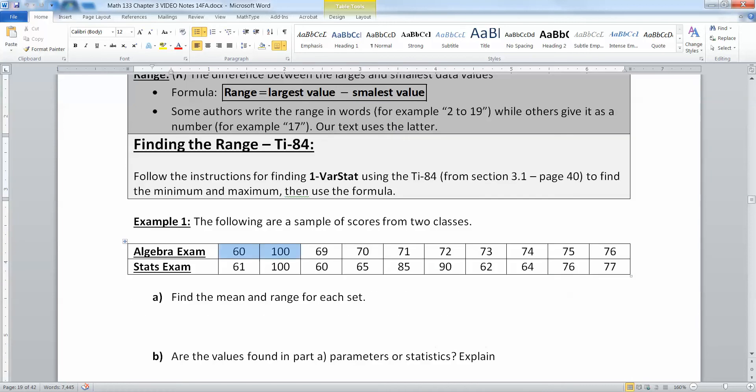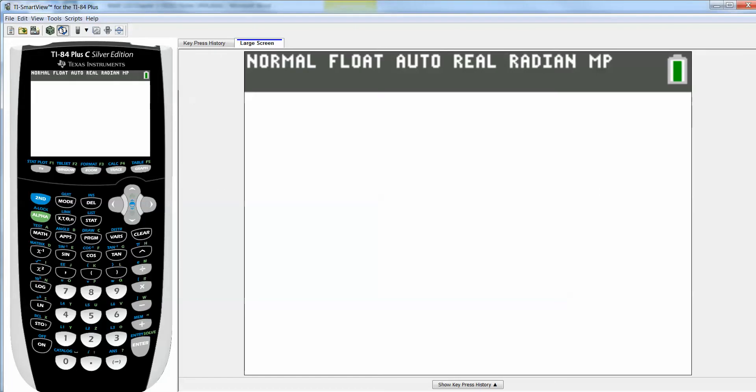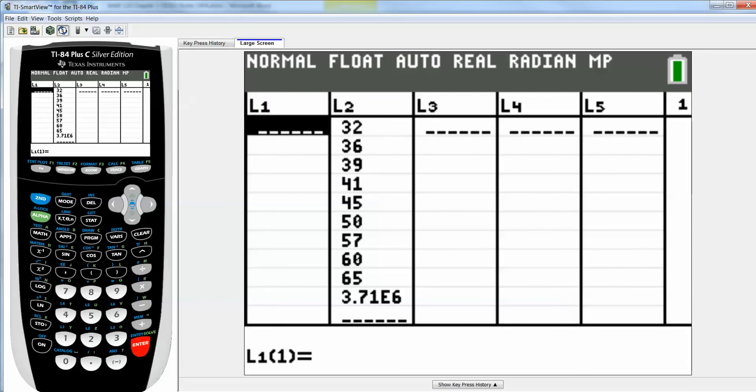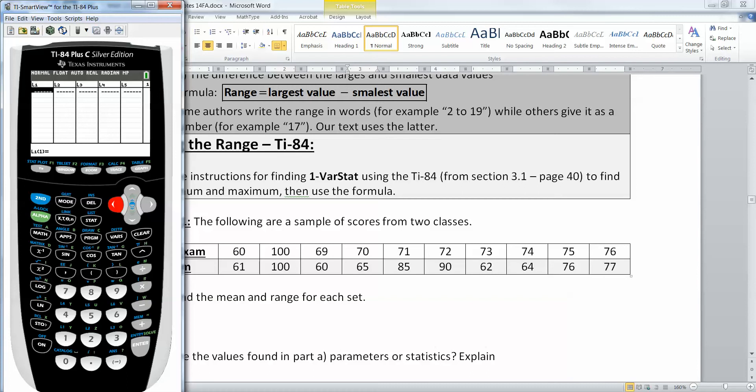We're going to find the range for these two data sets. You have an algebra exam here on the top and a statistics exam on the bottom. I'm going to grab my calculator, turn to stat, edit, and I've got some old data from section 3.1 in here. So I'm going to go up, press clear, enter, move to the right, up, clear, enter. I want both of these columns clear because I'm going to put algebra scores in this first one: 60, 100, 69, 70, 71, 72, 73, 74, 75, 76. Then I move to the right and put in the statistics exam.